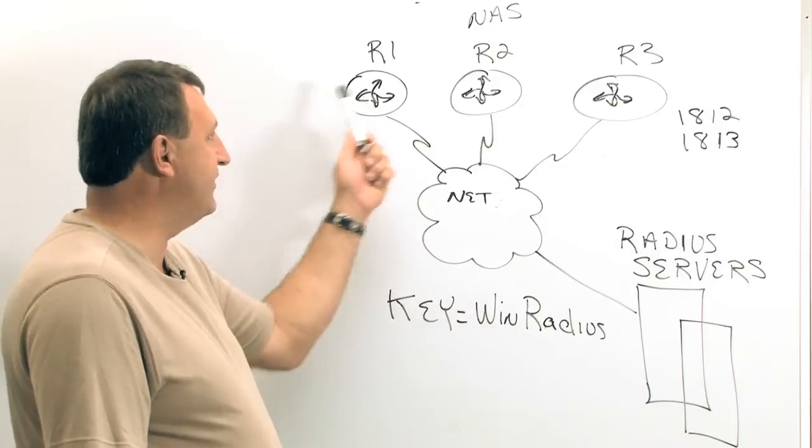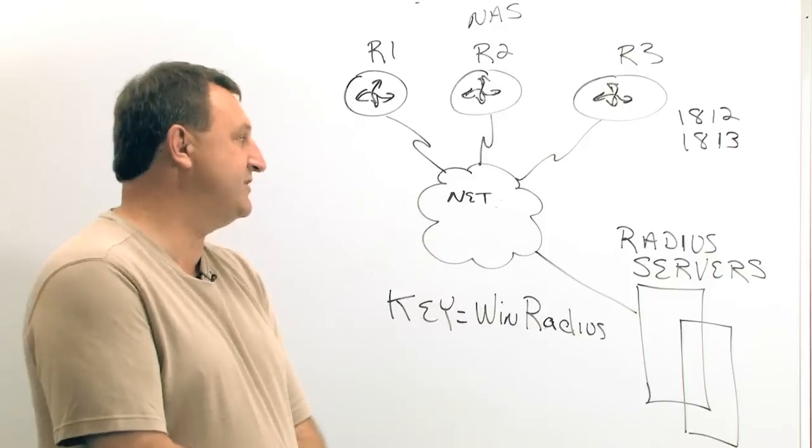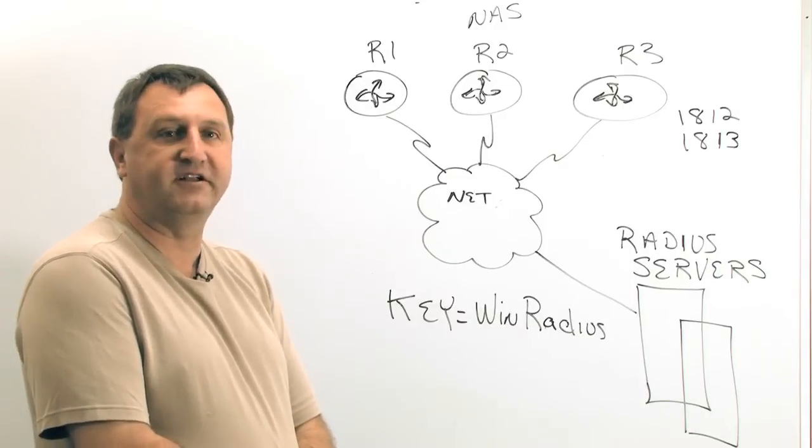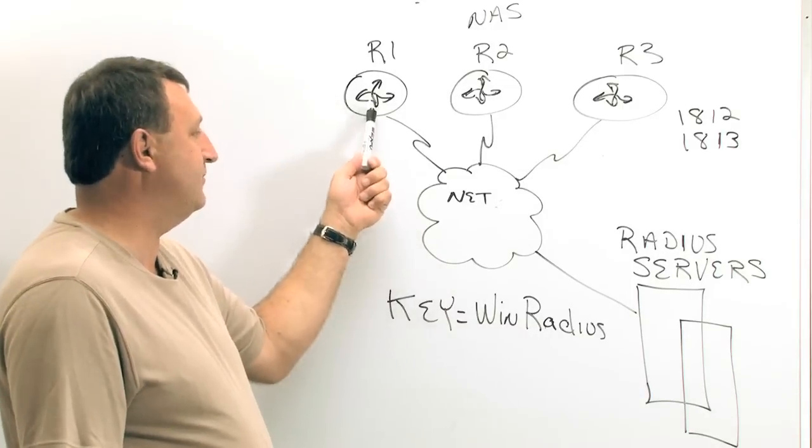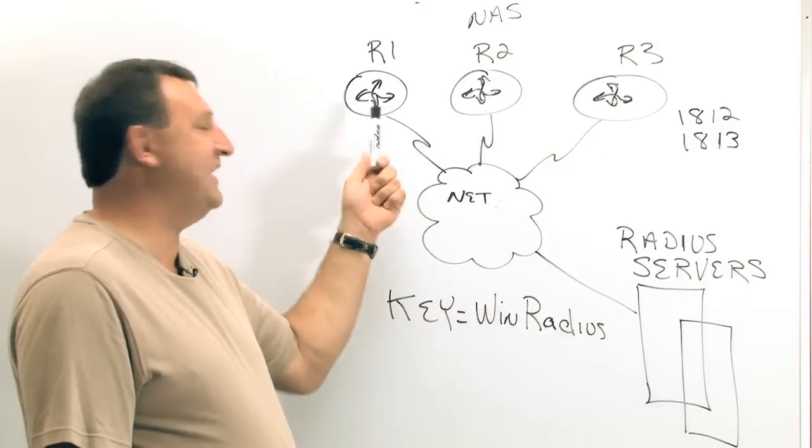In this case, we have to make sure that all of our routers within an enterprise have access to our servers. On each of our routers we're going to configure them to point to our RADIUS servers when someone wants to gain access.